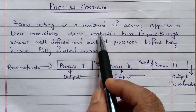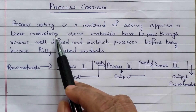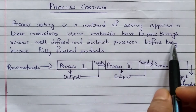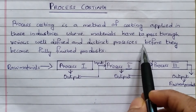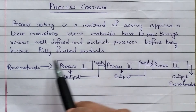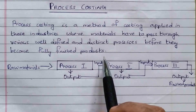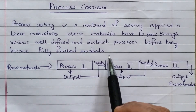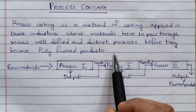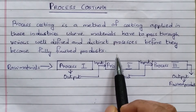Process costing is a method of costing applied in those industries where materials have to pass through various well-defined and distinct processes before they become fully finished products. Process costing is one of the costing methods.